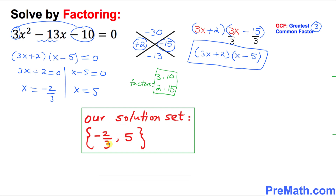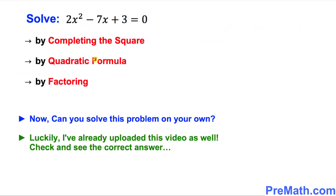Thus, our solution set turns out to be {−2/3, 5}. Finally, here is your assignment — can you solve it by these three different ways? I have already uploaded that video as well, so please check it out. Thanks for watching and please don't forget to subscribe to my channel for more exciting videos.